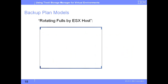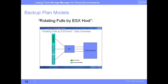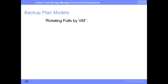Coming to slide number 18, we have rotating pools by ESX host. In this backup methodology, we select an ESX server as a candidate for running a full backup. All the VMs residing on this ESX host are candidates for full VM backups. The other ESX servers would be running incremental backups. On the next backup schedule, the second ESX server runs full backups, while the other two run incremental backups, and so on for each ESX server.